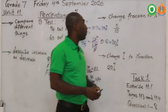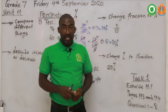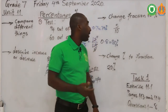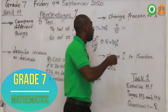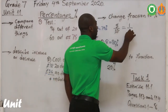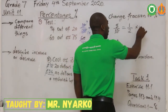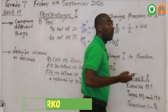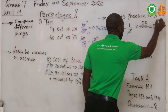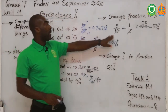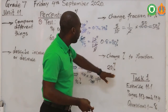Now let's look at how we can change fractions into a percentage. We have 5 over 10. First, simplify the fraction: divide both by 5 to get 1 over 2. The next step is to multiply by 100: 1 over 2 multiplied by 100 — the 2 cancels into 100 leaving 50. So our new percentage is 50%. We've successfully changed the fraction into a percentage.